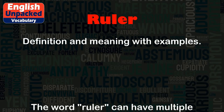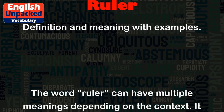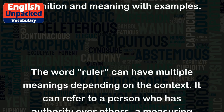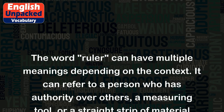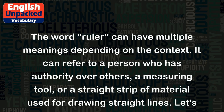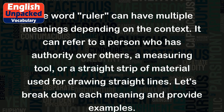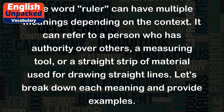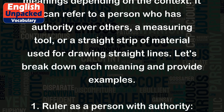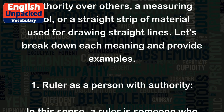The word 'ruler' can have multiple meanings depending on the context. It can refer to a person who has authority over others, a measuring tool, or a straight strip of material used for drawing straight lines. Let's break down each meaning and provide examples.